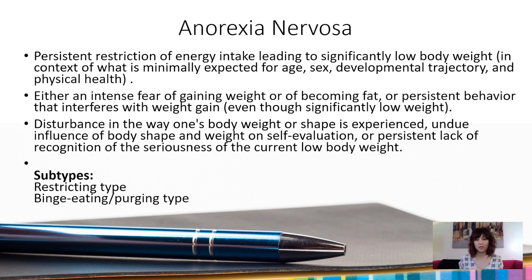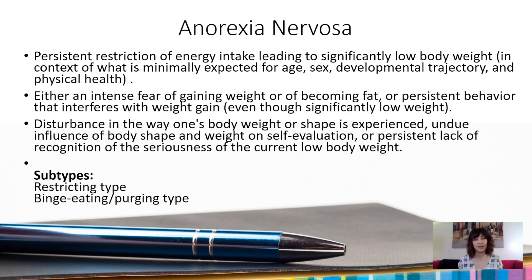Or persistent lack of recognition of the seriousness of current low body weight. There are two subtypes: restricting type, which is purely restricting energy intake, and binge eating/purging type, which has binge eating and/or purging episodes amidst the restriction. A change from DSM-4 to DSM-5 is that we no longer have specific weights listed as a diagnostic feature.